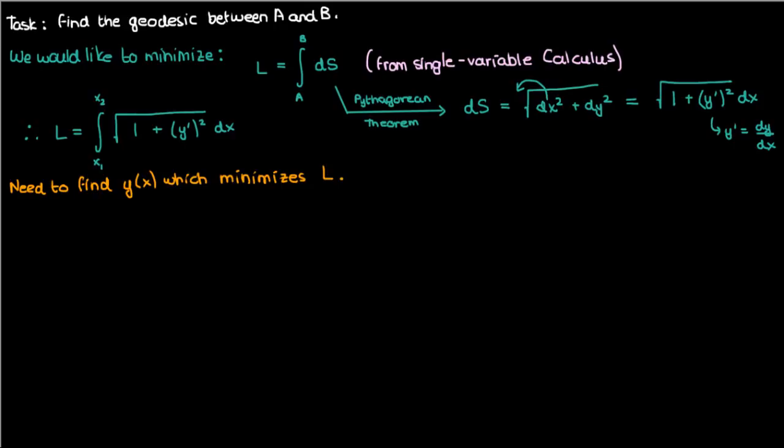The purpose of this problem is to find the function y of x such that this functional L is minimized. And in order to minimize L, we need to first determine the function y of x which makes L stationary. But how do we do that? How do we make L stationary?